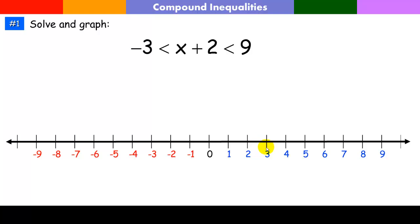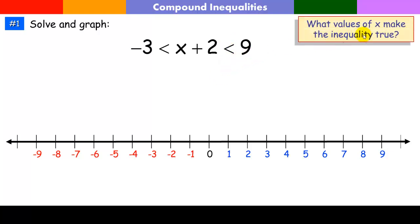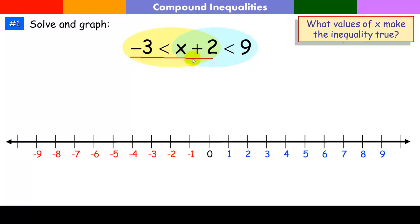Please write down our first problem. This is a compound inequality with two inequality symbols. The question is: what value of x makes the inequality true — what value of x can I place in this expression to make it both greater than negative three and less than nine? I think of this as a Venn diagram. I have two conditions: what value of x makes it greater than negative three, and what value of x makes it less than nine.